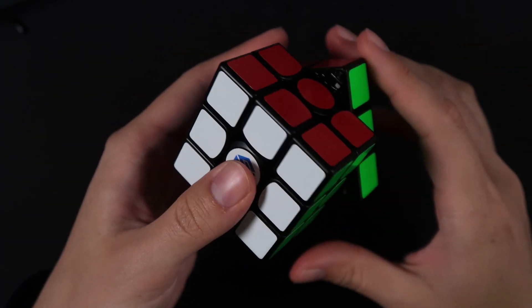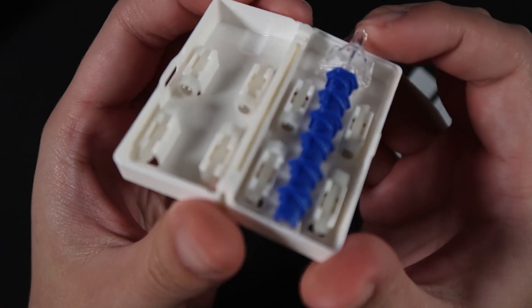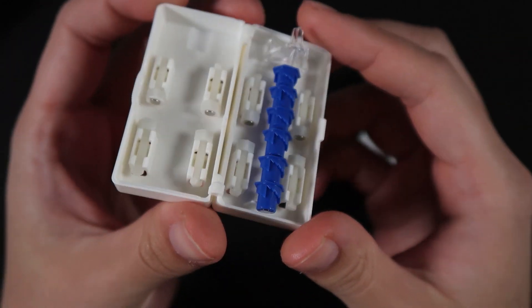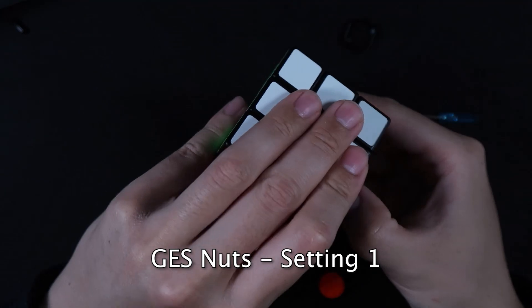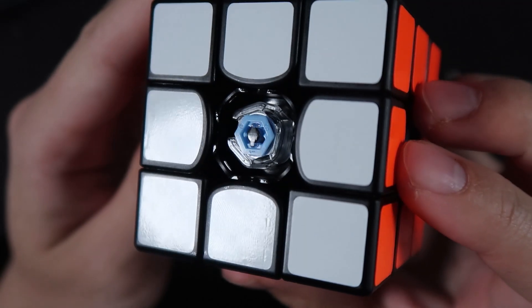There aren't any edge magnets to adjust on this cube so the next thing I did was tension the puzzle. I find that GAN cubes tend to feel quite flexible so tighter tensions tend to make the cube feel a bit more stable for me. I left the GES nuts on the first setting which is the tightest but two also feels quite nice.